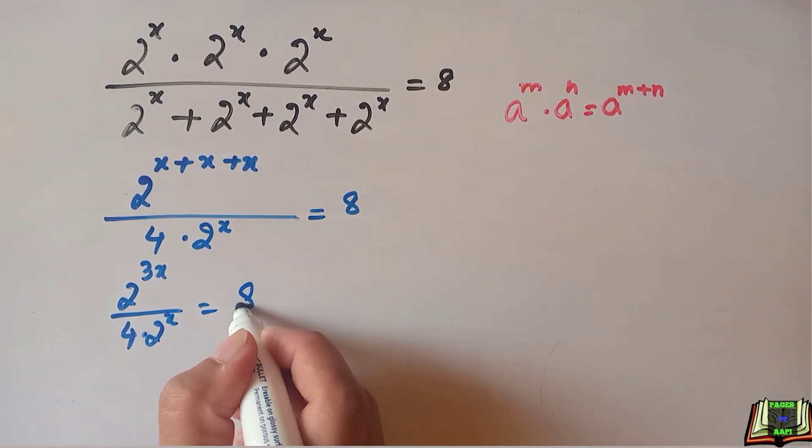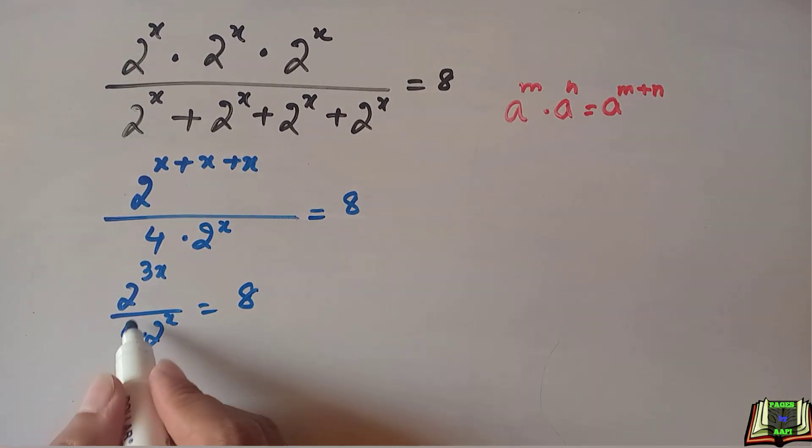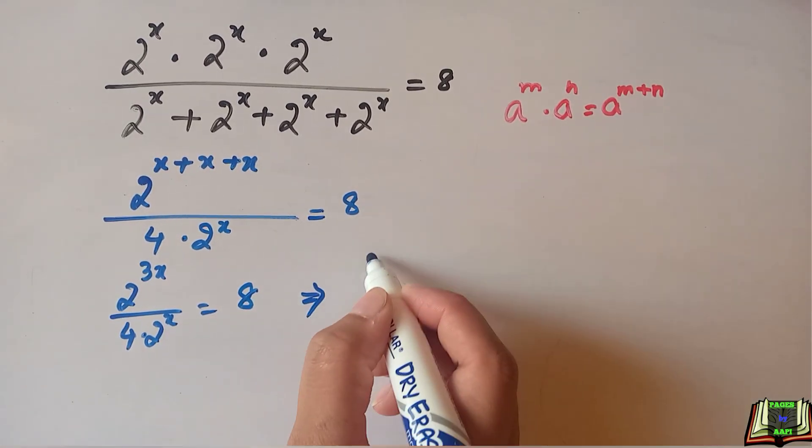In the next step, we are going to take this 4 to the right hand side, so it will be multiplied by 8.